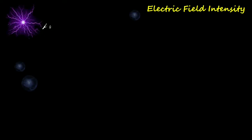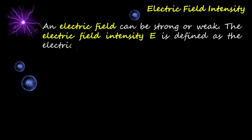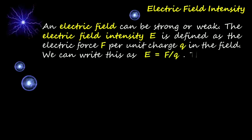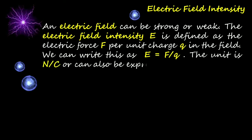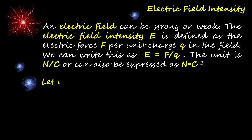The electric field intensity E is defined as the electric force F per unit charge Q in the field: E = F/Q. The unit is newtons per coulomb, or NC⁻¹. Let us study the sample problem below.